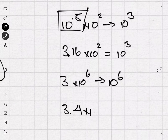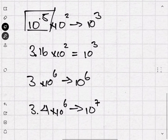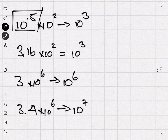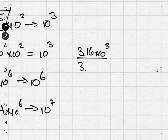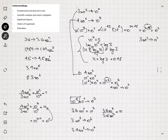So 3 times 10 to the 6 rounds to 10 to the 6. But 3.4 times 10 to the 6 actually rounds to 10 to the 7. Remember, we're only interested in the orders of magnitude. So if you have a number like 3.16, you round it up to the next order of magnitude. But if you have a number like 3.15, you keep the same order of magnitude. This means 3.16 times 10 to the 3 divided by 3.15 times 10 to the 3 is actually 10 times greater in terms of orders of magnitude. That's how you work with orders of magnitude — as long as you remember that 3.16 is the cutoff, you should be perfectly fine.